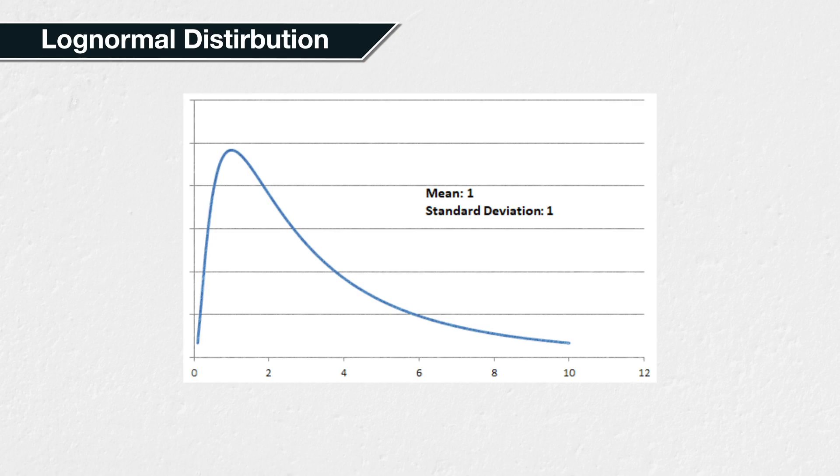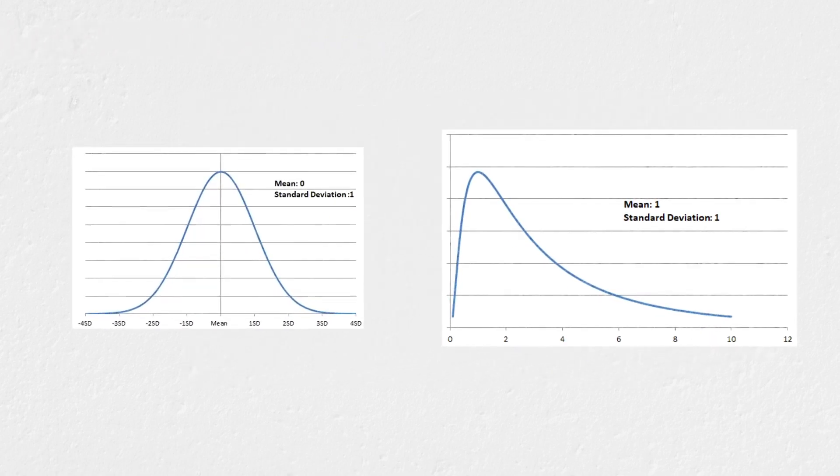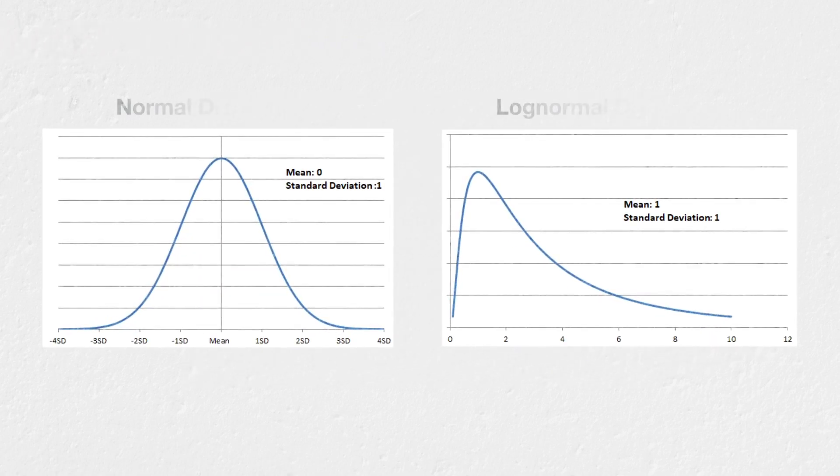Lognormal distributions eliminate the possibility of negative values, and so are more suitable to describe the price of an asset than normal distributions, which can be negative. Returns in a given time period, though, can of course be negative.